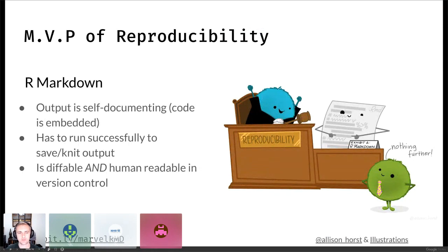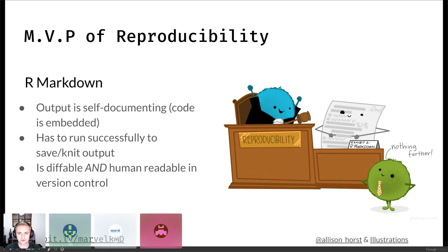R Markdown is kind of the MVP of reproducibility — both the minimal viable product, in that an R Markdown document must knit successfully so the code has to run to save output, and one of the most valuable players of reproducibility. You can keep your source code and output self-documenting and closely tied together. It's still diffable, human-readable, and source-controllable, so you can put it into something like Git and still see where changes were made.